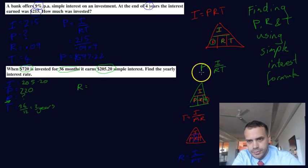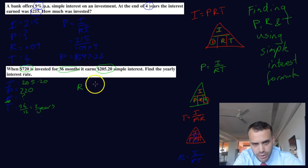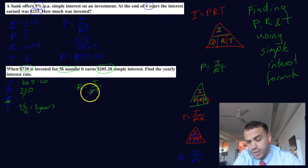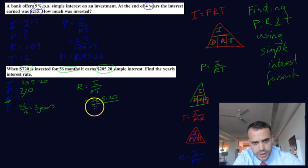So our formula, looking at our triangle again, if you want to find R, that'll be I divided by P times T. The interest is $205.20. The principal is 720. And the time is three years. Put that into your calculator.